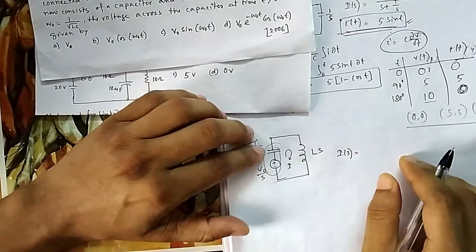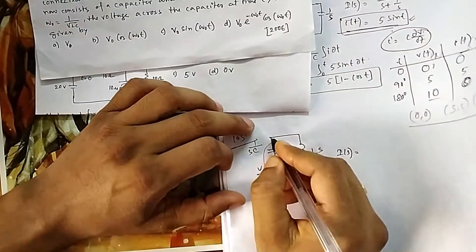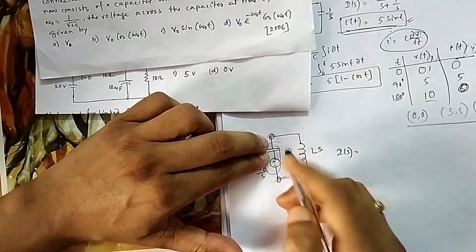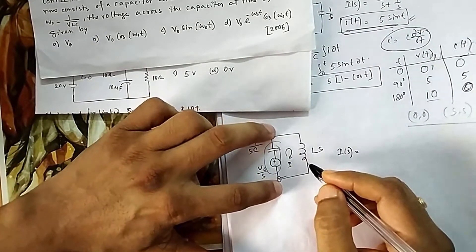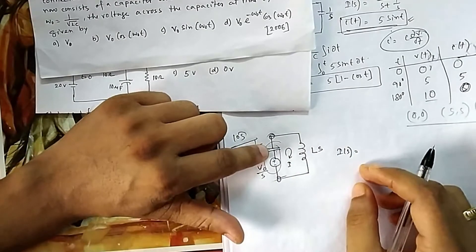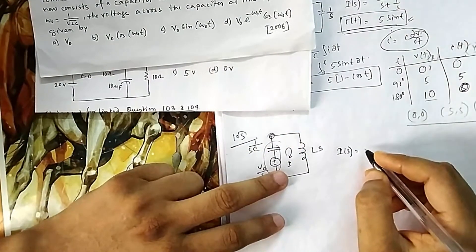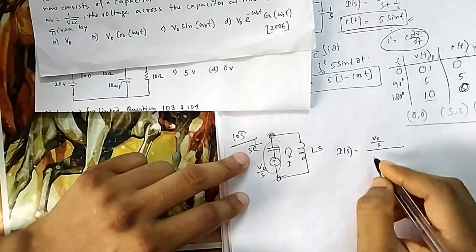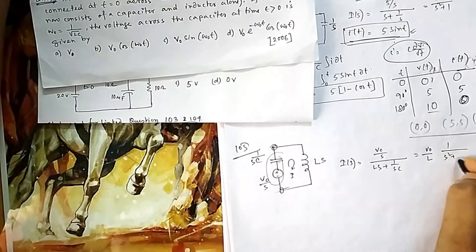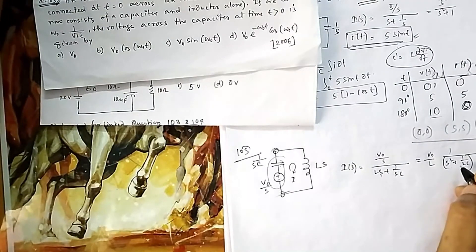In the Laplace domain, the initial capacitor voltage becomes V₀/s in series with the capacitor impedance 1/(sC) and inductor impedance sL. The current I(s) = (V₀/s) / (sL + 1/sC) = V₀/(L) × 1/(s² + 1/LC). Rather than finding the voltage across just the capacitor element, it is easier to find the voltage across the inductor, which equals the total capacitor voltage.